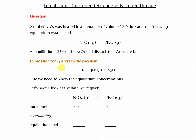So let me write an expression for Kc and rewrite the problem. Kc equals NO2 squared divided by N2O4. So we need to know the equilibrium concentrations of those two things to work out Kc. Let's have a look at the data we're given.